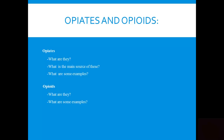To recap: opiates are naturally occurring, derived from the poppy plant — opium, with its main components morphine, codeine, and thebaine. Opioids are semi-synthetic or completely synthetic. Examples are heroin — which is the morphine molecule with acetyl groups added — and things like Percocet, fentanyl, Lortab, and Norco. Some of those drugs will contain thebaine with additional substances added to them.